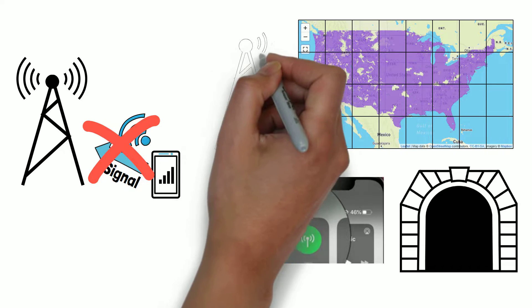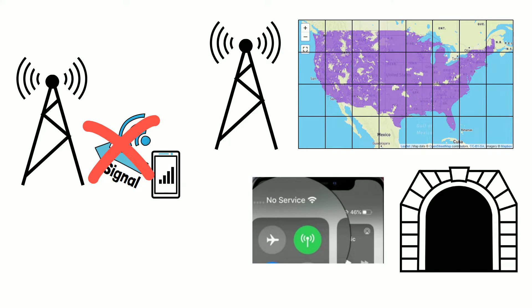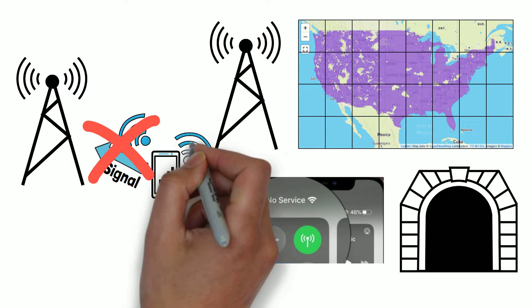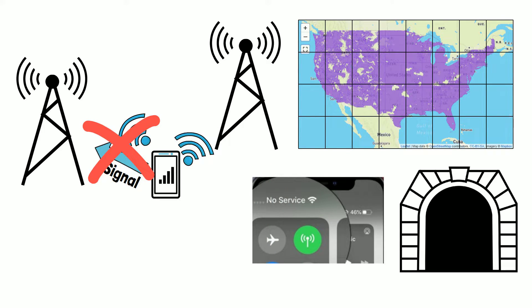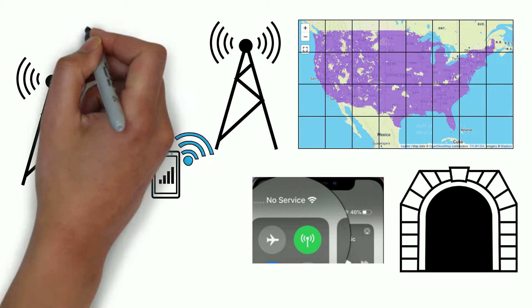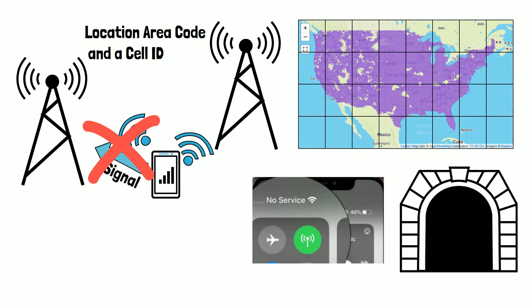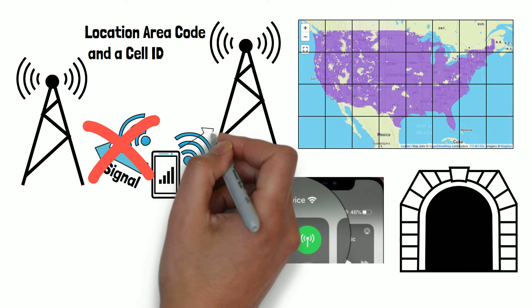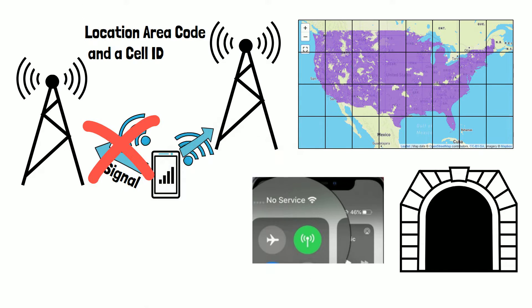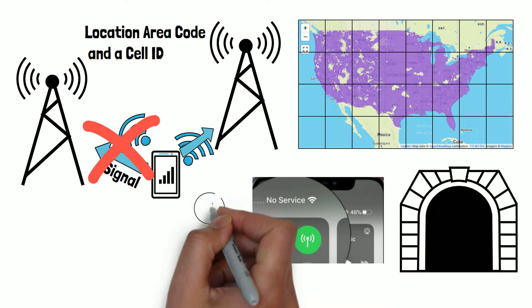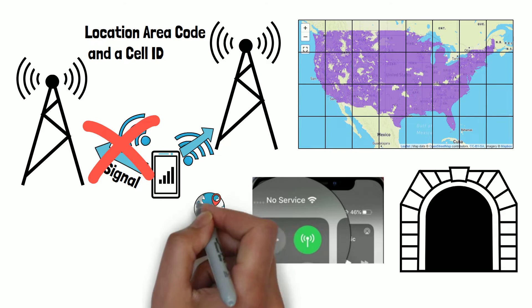As the device moves, it may switch to a different tower when it enters a new cell to ensure you still have service. Each cell tower covers a specific geographical area and is identified by a unique combination of location area code and a cell ID. The location area code represents a broader location area and the cell ID identifies the specific cell within that area. When a mobile device communicates with a tower, the network logs the location area code and cell ID, creating a record of the device's location.